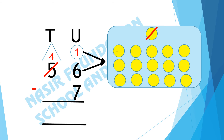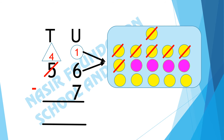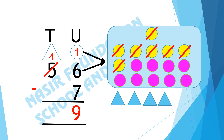1 ten and 6 units makes 16 units. After subtracting 7 circles from 16, here we are left with 9 units. Now we will subtract the tens: there are 4 tens and we have to subtract nothing, so we have 4 tens.